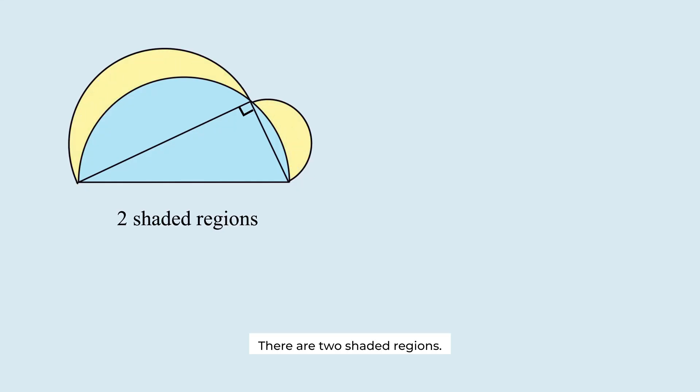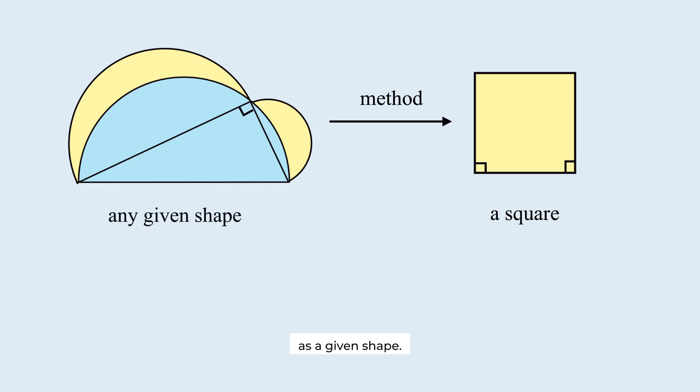There are two shaded regions. Let's construct a square with the same area as the shaded regions. There is a general method to construct a square with the same area as a given shape.